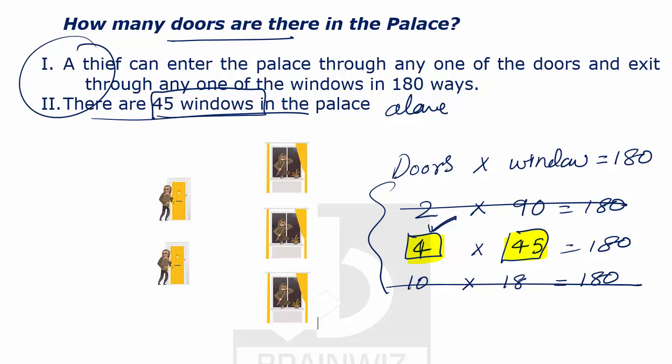So statement one and statement two together are sufficient. Individually they are not sufficient. Thank you.